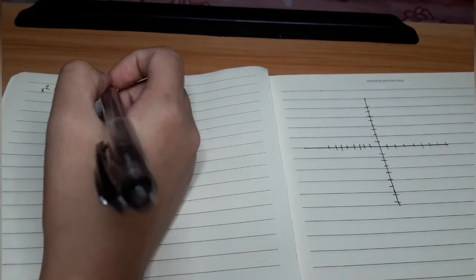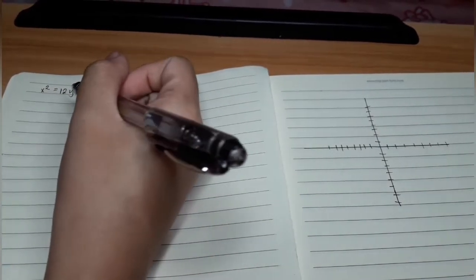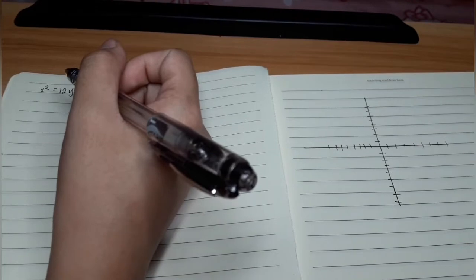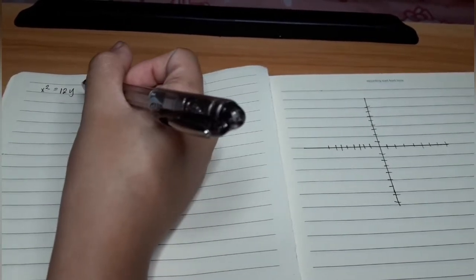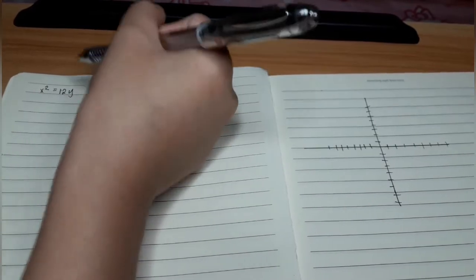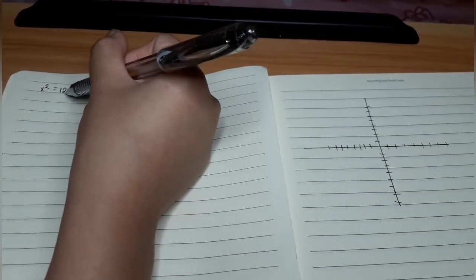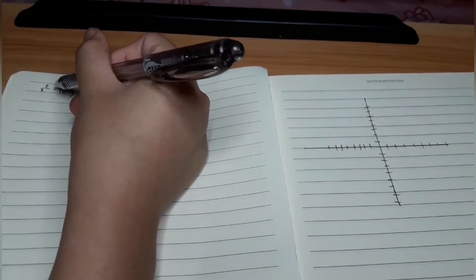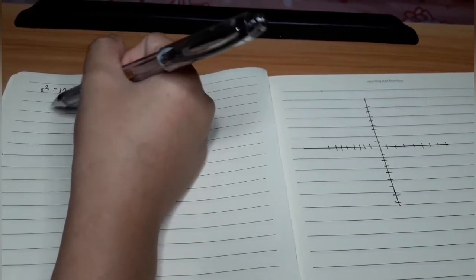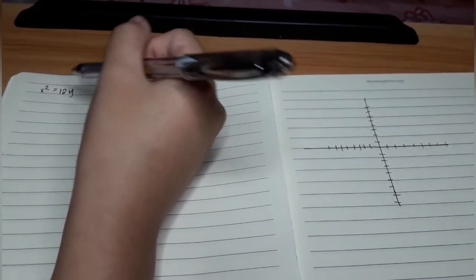What we are going to do first is to look at the first variable or what is the variable that has squared. In this equation, we have x squared equals 12y. x is squared, meaning to say our parabola opens upward or downward.